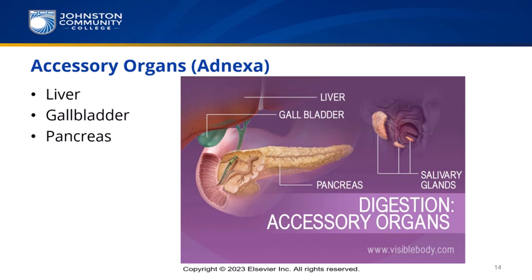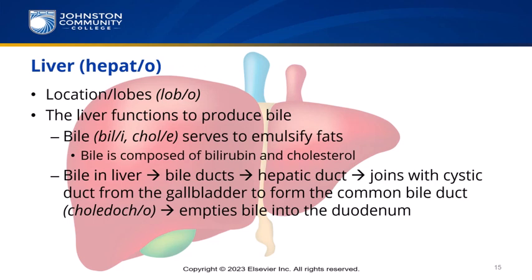The combining form hepato means liver. The liver is composed of two lobes located mostly in the upper right quadrant of the abdominal cavity. It produces bile that emulsifies — breaks down — fats. Bile is composed of bilirubin, the waste product from the normal breakdown of hemoglobin in red blood cells at the end of their lifespans, and cholesterol, a fatty substance found only in animal tissues. Combining forms include lobo for lobes, chole or bilio for bile, and choledoco for the common bile duct.